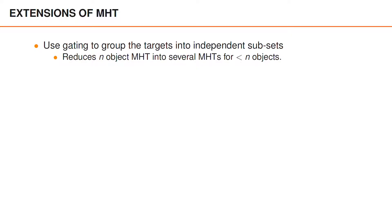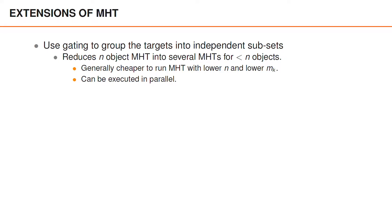First, let's mention some extensions of MHT that are possible but are outside the scope of this course. When we presented gating, we saw that it could be used to group the objects and measurements into smaller subsets. In MHT, this idea can be used to group objects and measurements such that we actually run several different MHTs, one for each group. The benefit is that MHT for a smaller number of objects and measurements has a lower computational cost, and we can also run the different MHTs in parallel.